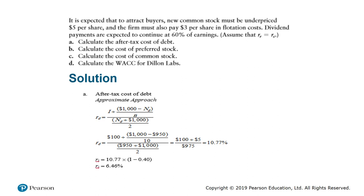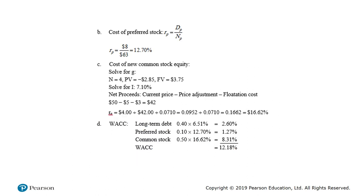The final step is to calculate the WACC. The weights were given at the beginning of the problem: 40% for debt, 10% for preferred stock, and 50% for common stock. After performing the weighted average cost of capital calculation, the result is WACC equal to 12.18%.